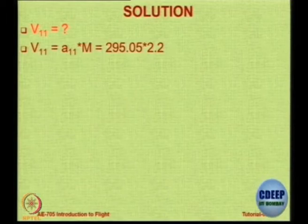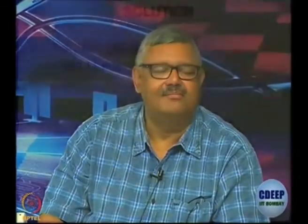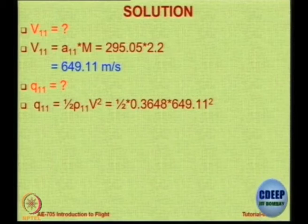Give me the answers. 649.11 m/s is the speed of the aircraft. Next, you need the dynamic pressure ½ρV². Using ρ = 0.3848 and V = 649.11, get the dynamic pressure. The answer is 76852 Newton per meter square.